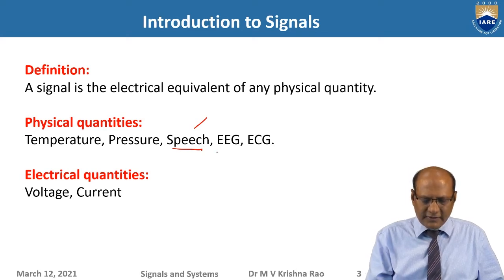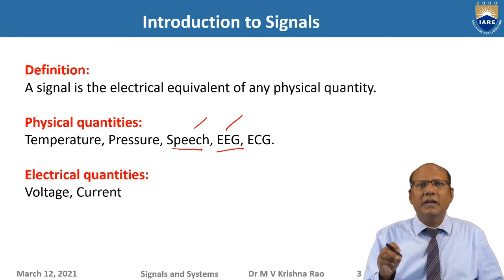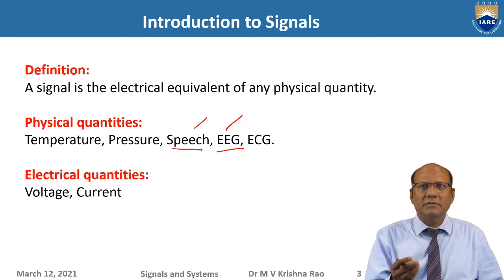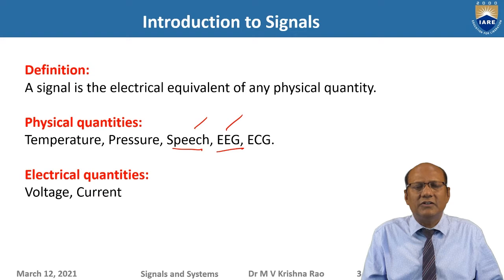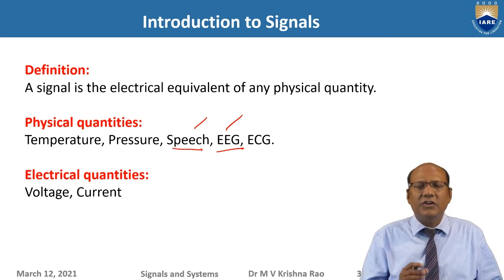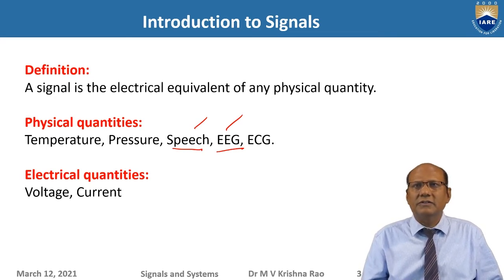Then, EEG — electroencephalogram — captures at different locations of our skull, by putting electrodes, the electrical activity happening at those points. This electrical activity at different points of the skull is captured by EEG. There are 16 channels, 64 channels, 128 channels like that. The physical parameter being sensed here is ions — the changing ion density, which is basically current, or charge density changing temporally with time on the skull at different locations. So that is what EEG is.